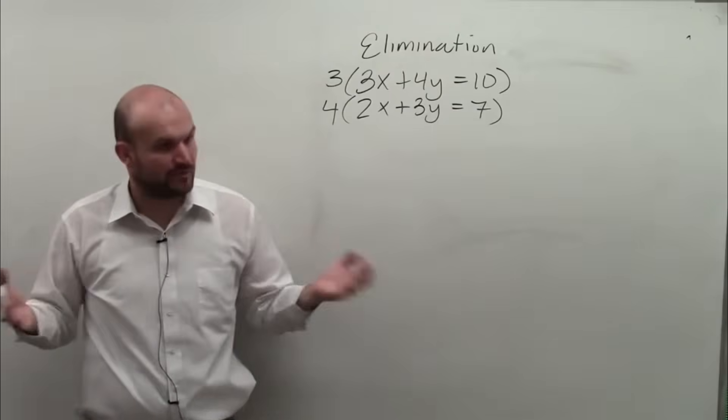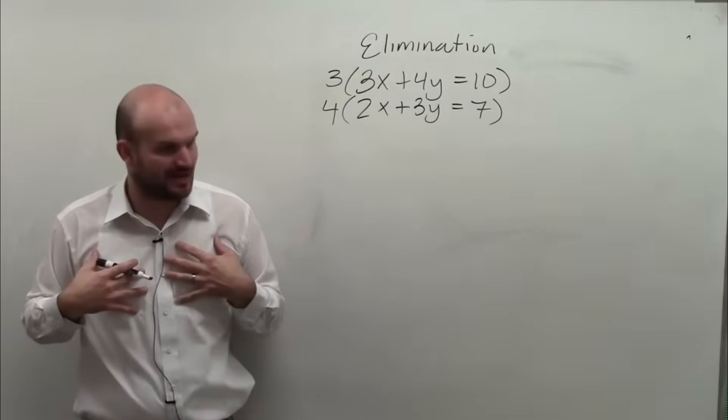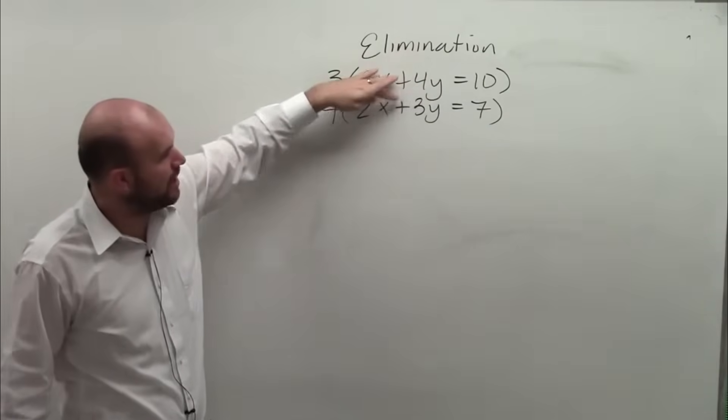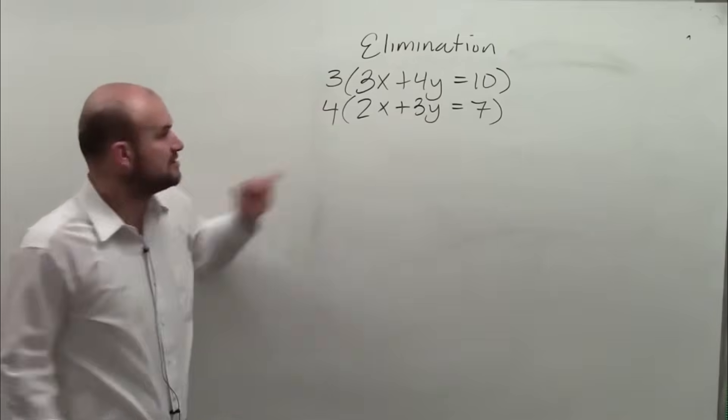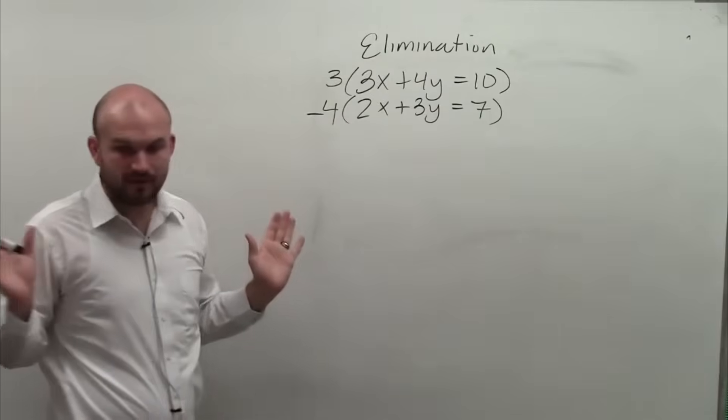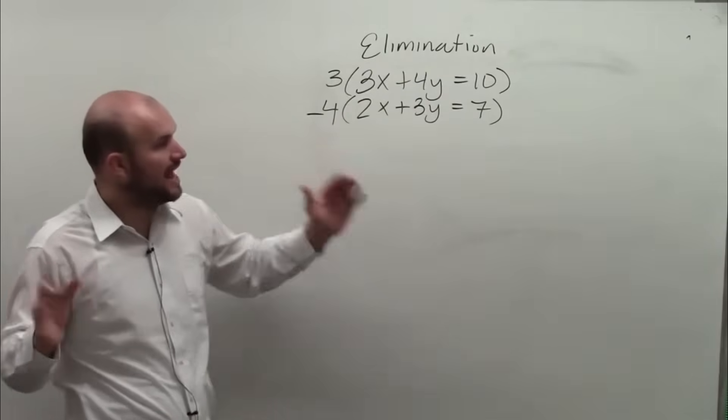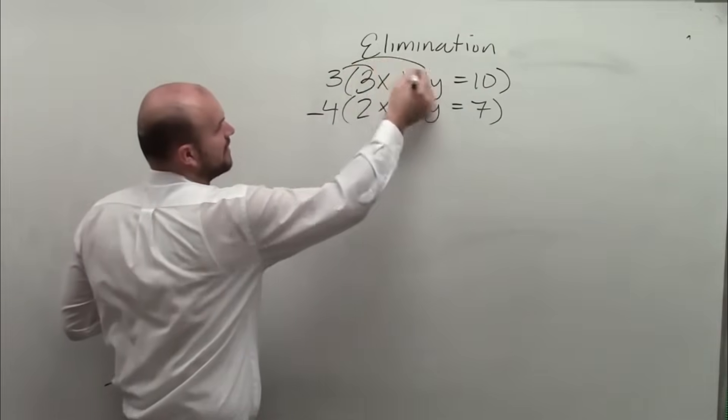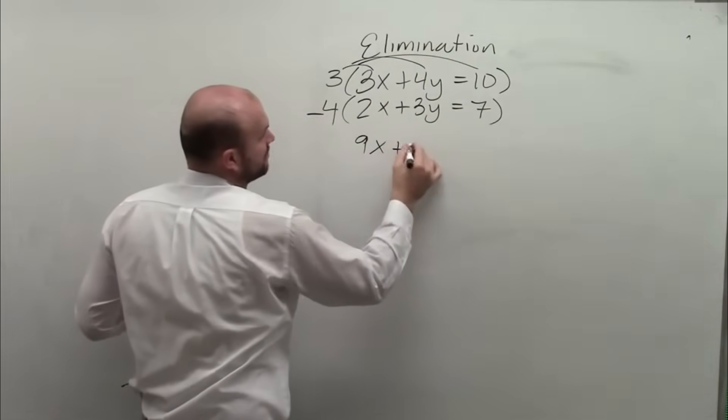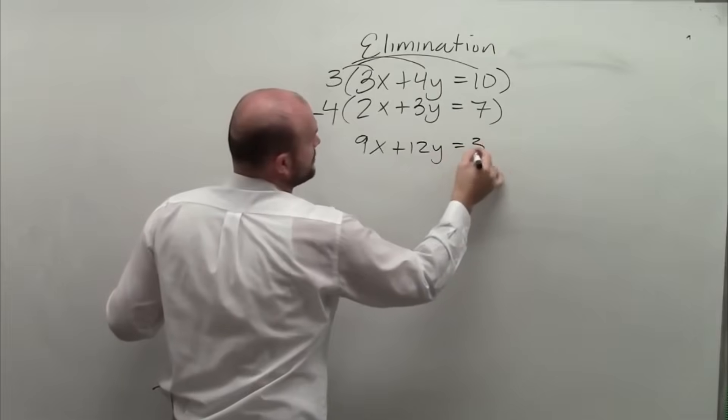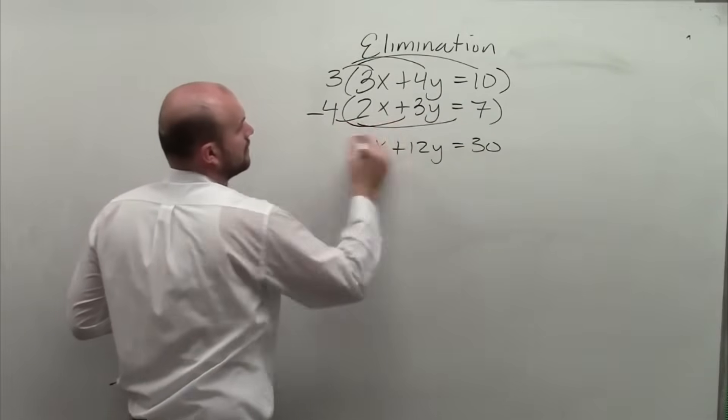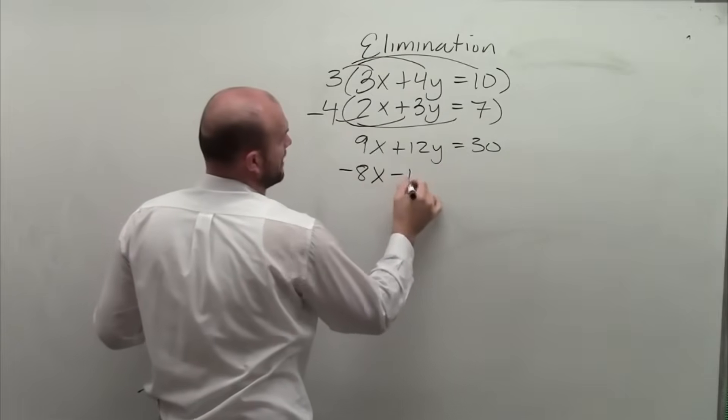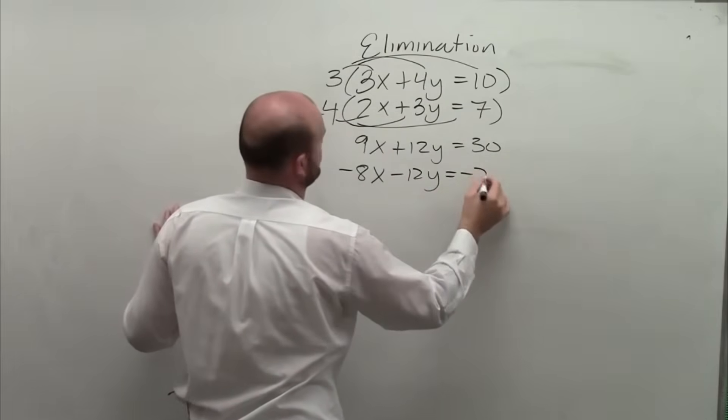I don't like subtracting. Subtracting, I think, makes mistakes. So if I'm going to add them, if I have 12y plus 12y, that's going to give me 24y. So therefore, I need to make one of them negative. Doesn't matter which one. You just need to make... When you're adding, you've got to make sure one's positive, one negative. So now let's go and do the math. Remember, when you're multiplying, you've got to multiply everything. So this is 9x plus 12y equals 30. This becomes negative 8x minus 12y equals negative 28.